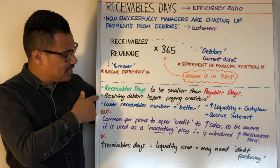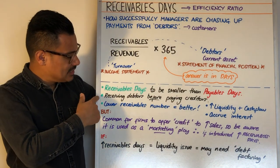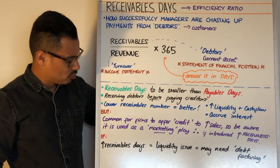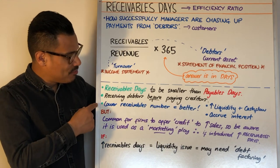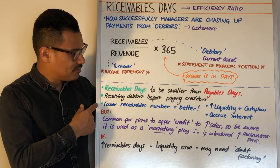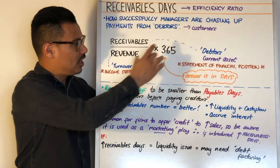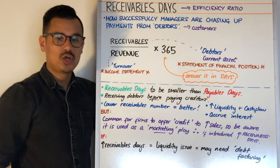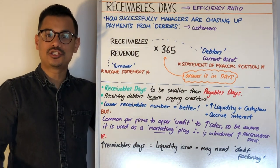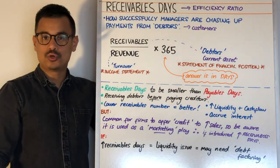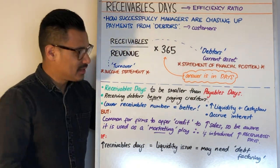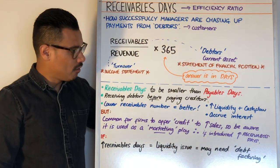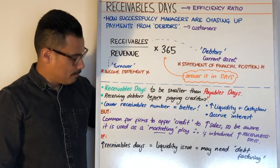You want to be receiving from your debtors before paying your creditors. The lower the number that comes out of this formula, the better your liquidity situation, because your cash flow is better. And as mentioned, you may be able to accrue interest on your money during that period.